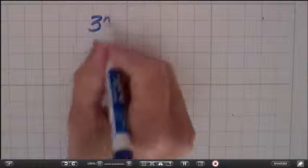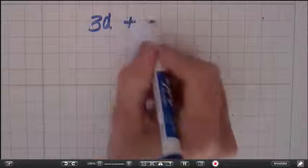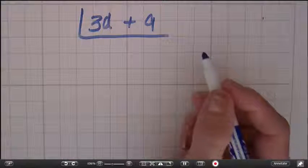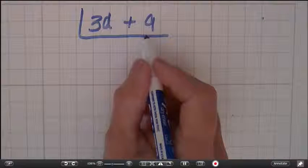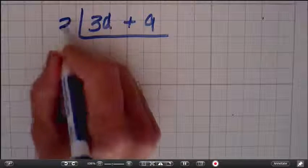What about when we have a problem like this? 3d plus 9. No worries, exact same process. What number do I take out of the 3 and the 9? Is there a factor that they have in common? And there is, it's a 3.